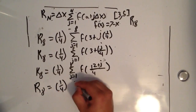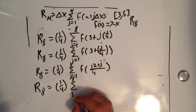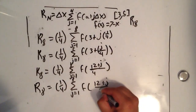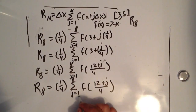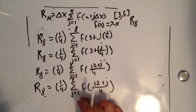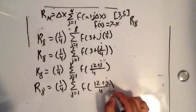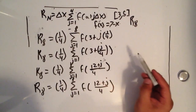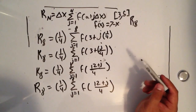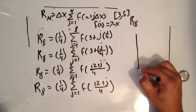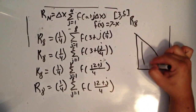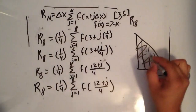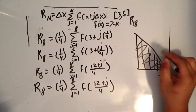Let's write this out one more time. With this Riemann sum, j starts at 1 and goes all the way up to 8, and we evaluate the function 8 different times — that's what R(8) means. It gives us the area under the graph by breaking it into 8 separate rectangles and summing all their areas.